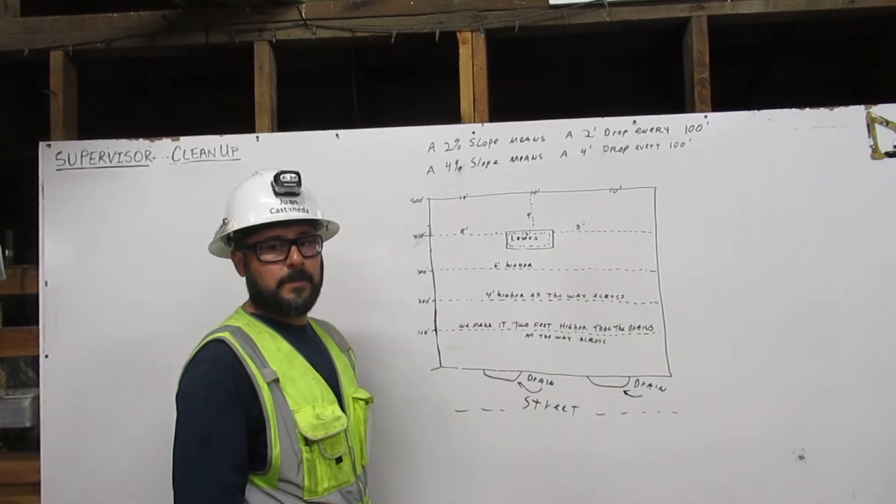I'm Juan Castaneda. I'm construction math certified. I'm going to demonstrate how to lay out a 2% slope using a parking lot example.